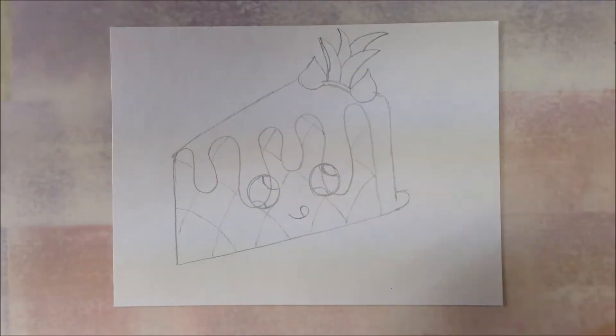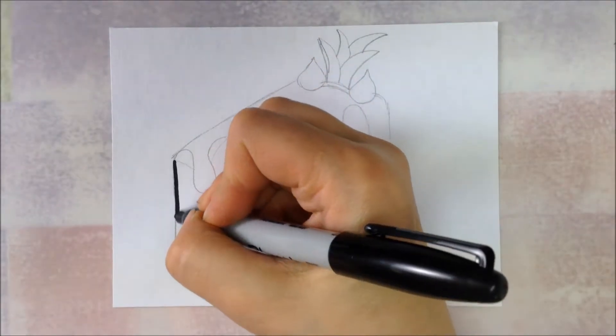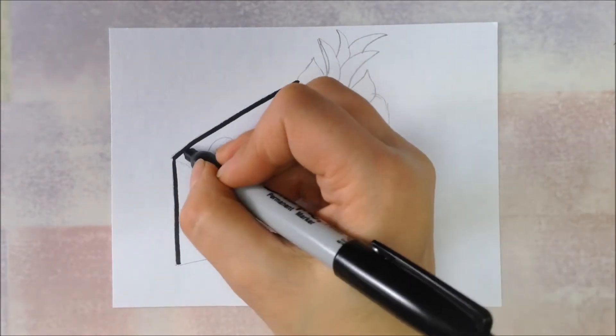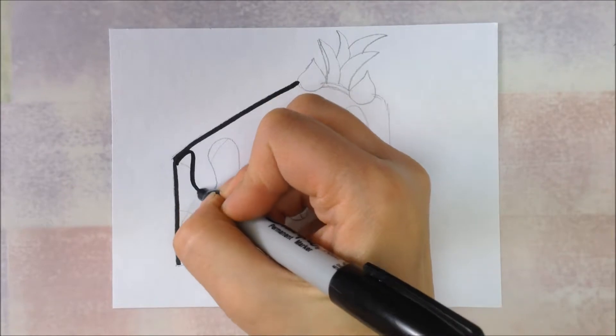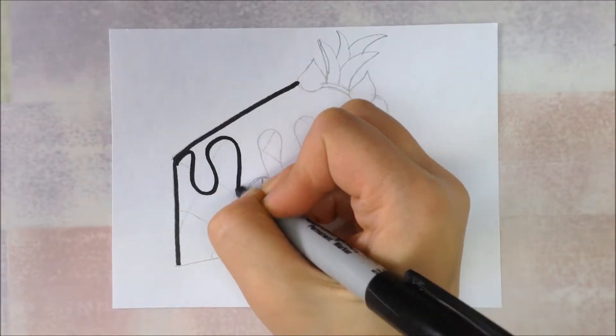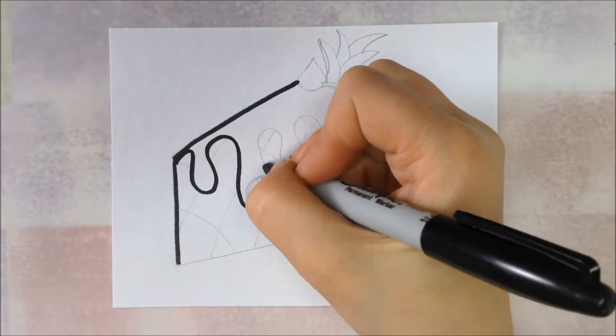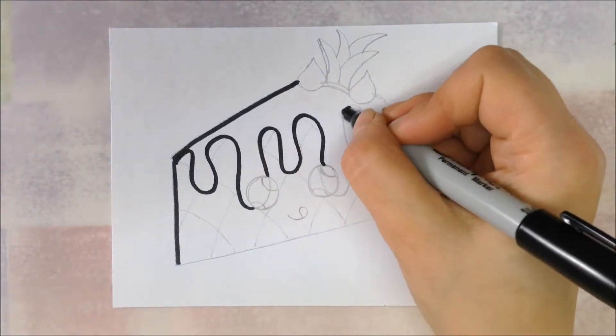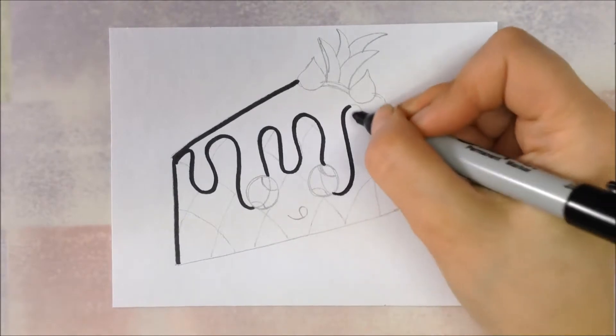Now it's a pineapple, so now we're going to outline with a permanent marker. We're going to outline almost everything with the black marker. The only thing that we're not going to do is those lines that made it look like the outside of a pineapple because we're going to do those in brown. Everything else should be outlined with the black permanent marker.